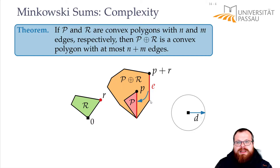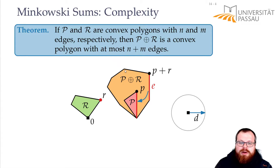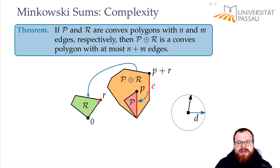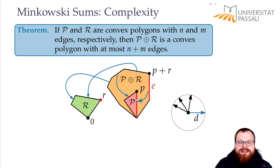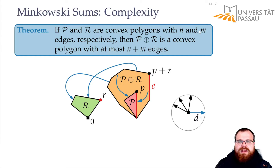We see that all the points on this edge in the Minkowski sum are generated from this point r and this edge of the second polygon. And then we can rotate around the hull of this Minkowski sum and take the next edge, that is again extreme with respect to some direction. So it has to be computed by some point and some edge — in this case the point p and this edge of r. This edge here is computed by this edge and this point, and so on. We can move around the hull of the Minkowski sum and at the same time around the hull of these two polygons, and we can relate every edge of the Minkowski sum to some edge of one of these polygons. Since they have n and m edges respectively, that means we have at most n plus m edges in the Minkowski sum.